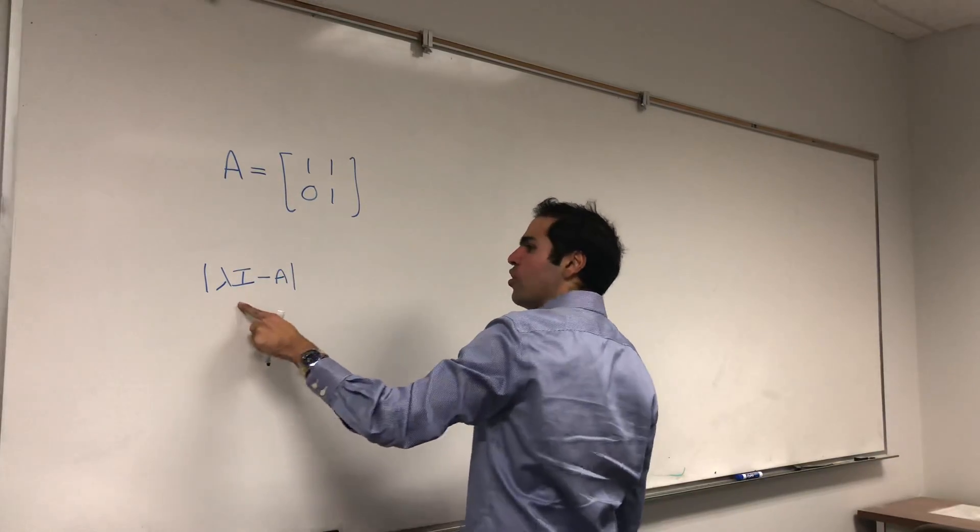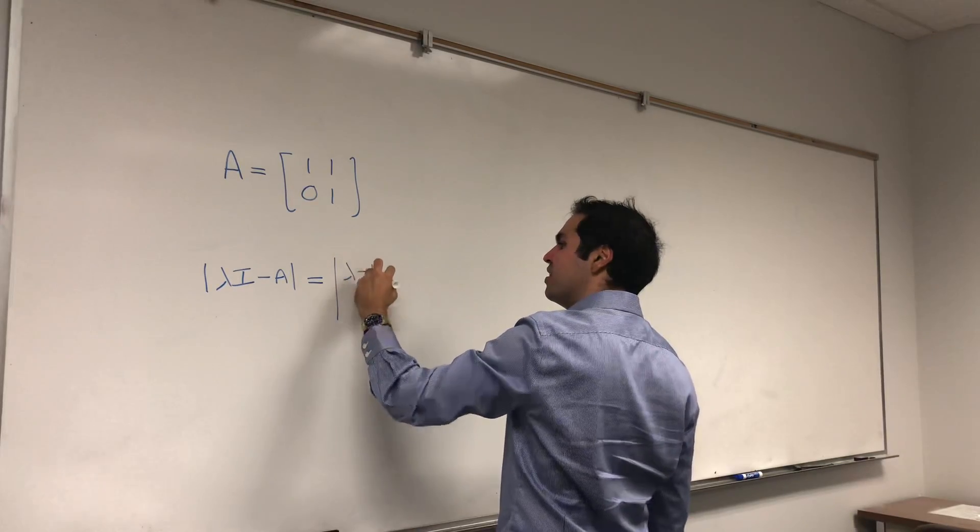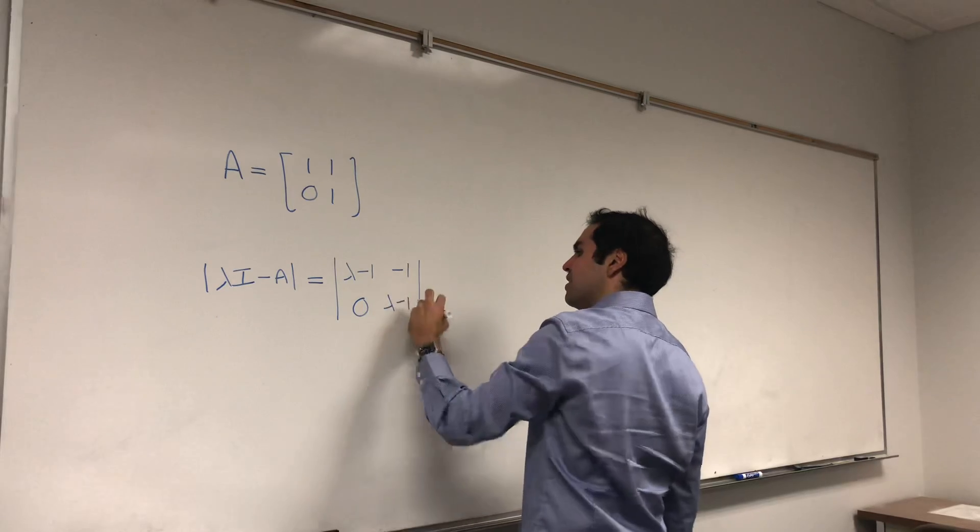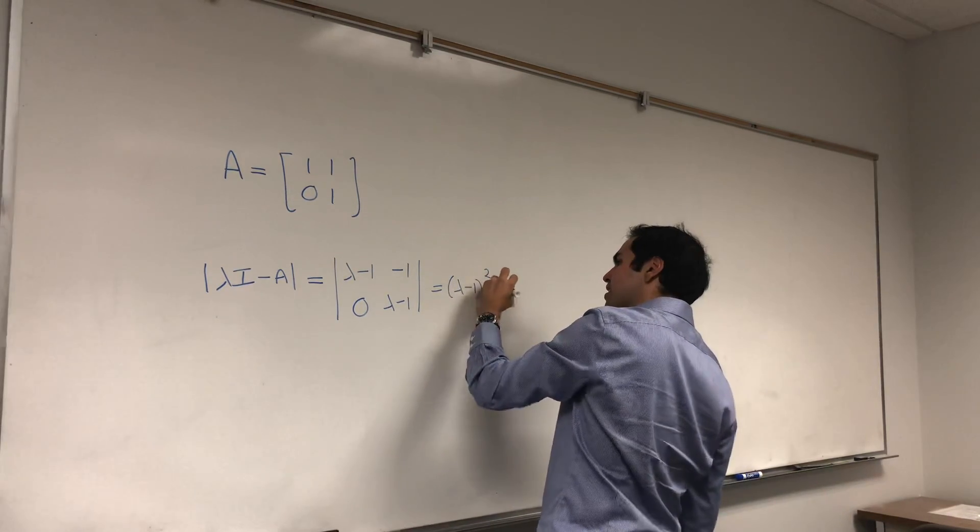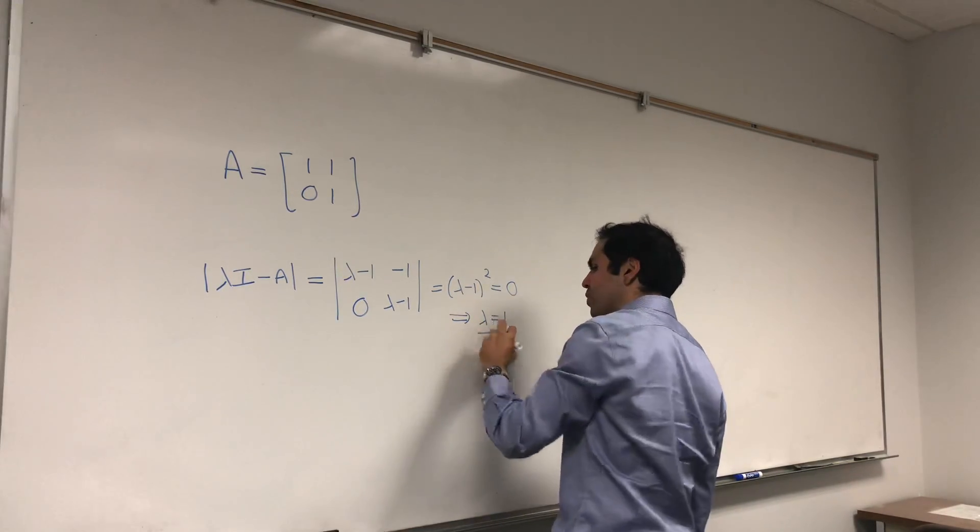So let's find the determinant of lambda I minus A, which is the determinant of lambda minus 1, and minus 1, 0, lambda minus 1, which gives you lambda minus 1 squared, and that's 0, and that gives you lambda equals 1.